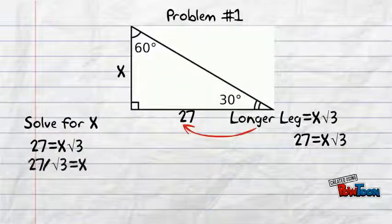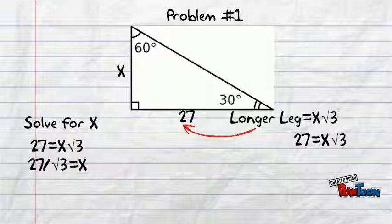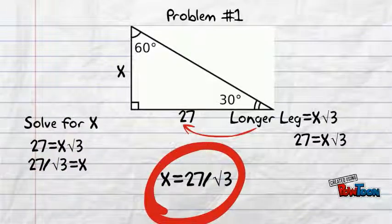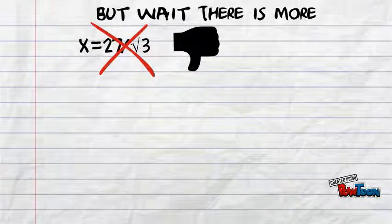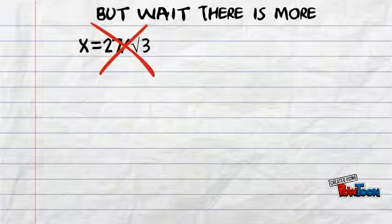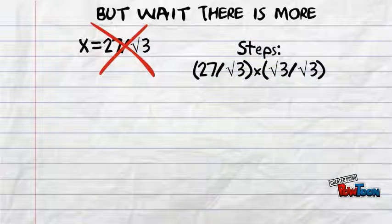All we have to do is divide root 3 from both sides and x becomes 27 over root 3. So, that should be our answer, right? Wrong. There is more. Since the rules of math say you can't have a square root as a denominator, we have to get rid of it. In order to do that, we have to simply multiply both parts of the fraction by root 3.